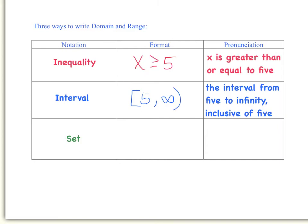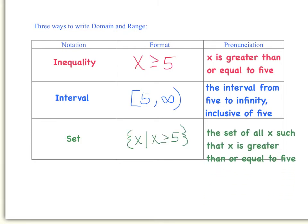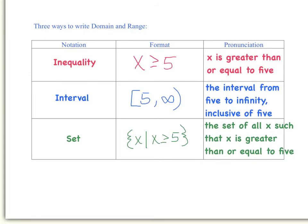Now let's look at set notation. Set notation is written like this, and it is pronounced 'the set of all x such that x is greater than or equal to 5.' If you are one of my students, set notation is the one we will use the least, but you are still required to recognize this format and what type of notation it is.